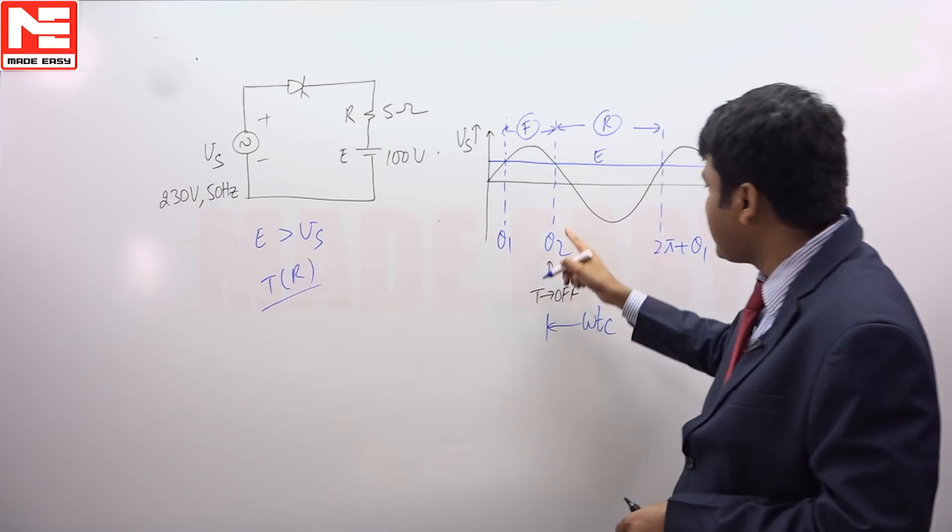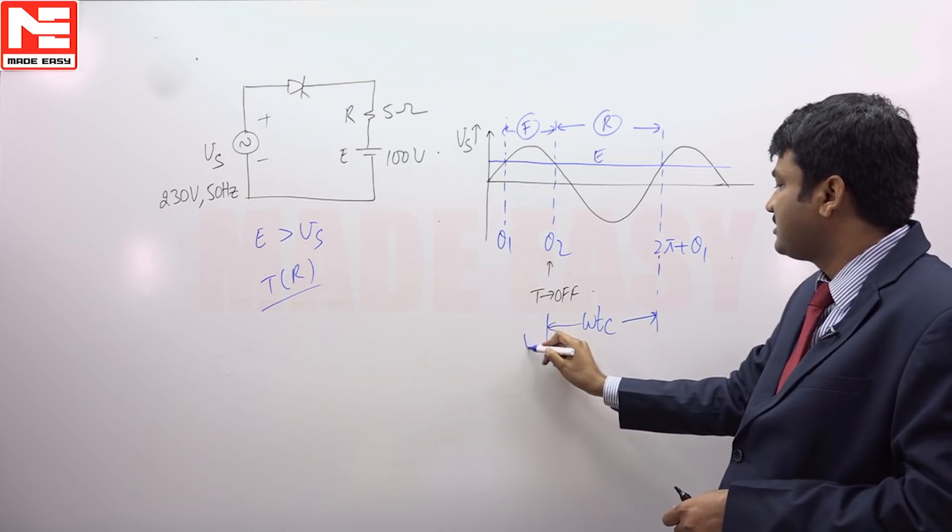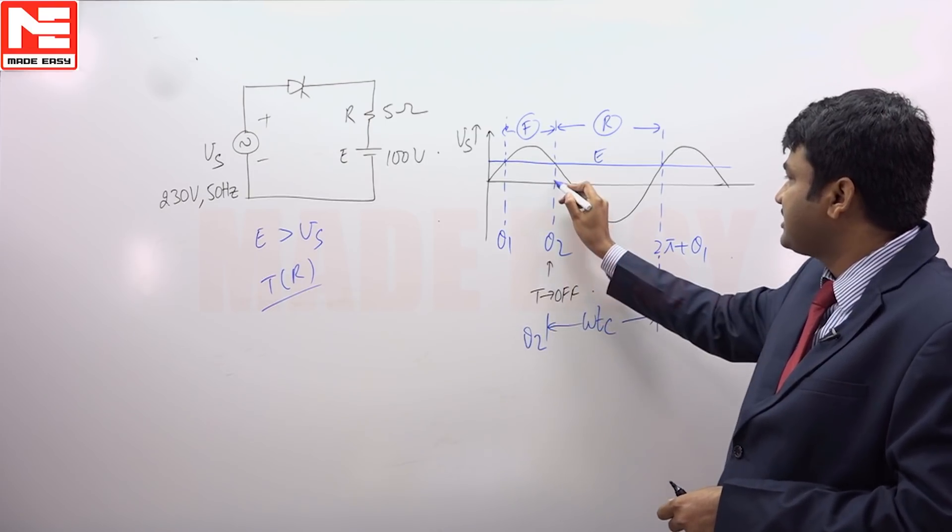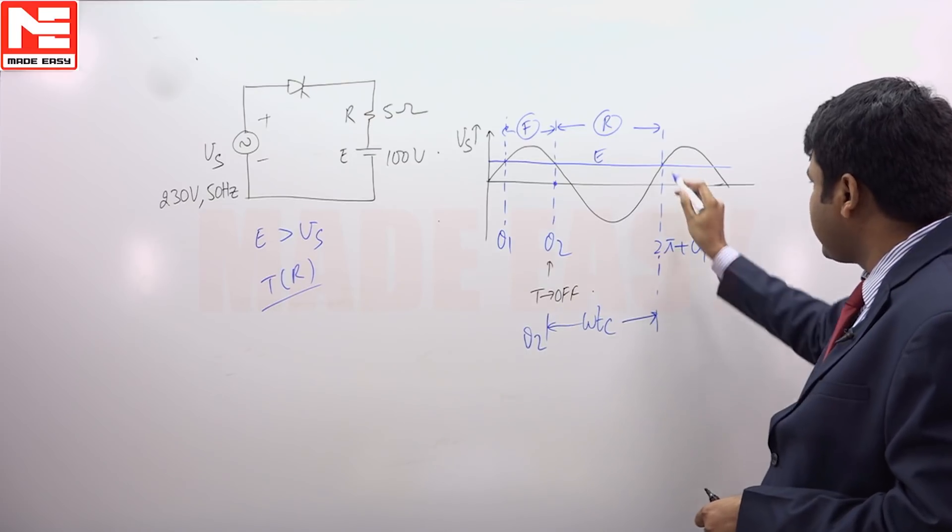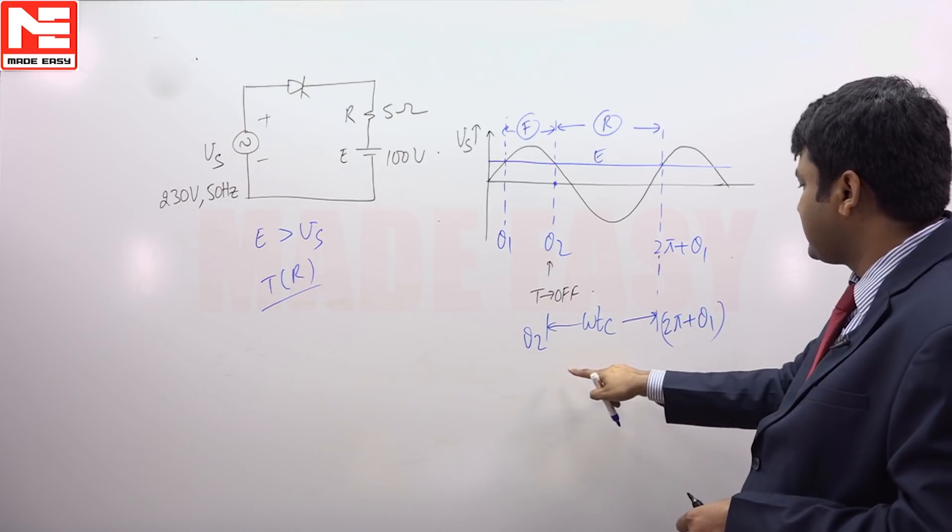When thyristor stops at theta 2, thyristor is reverse biased up to 2 pi plus theta 1. So this duration is circuit turn off time.